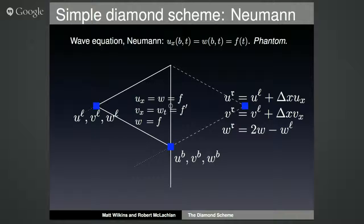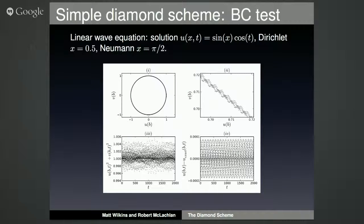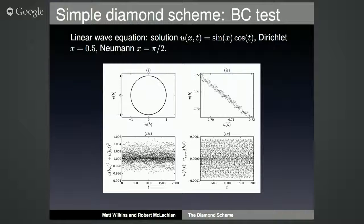Here we're trying it out on a simple problem with Dirichlet on the left and Neumann on the right. The figure top-left should be a circle, the top-right is an enlargement showing the points are fairly tightly clustered even after tens or hundreds of thousands of iterations — it hasn't drifted off. The bottom-left shows the energy looking nicely bounded, and the bottom-right shows the error at the right-hand boundary under the Neumann condition.